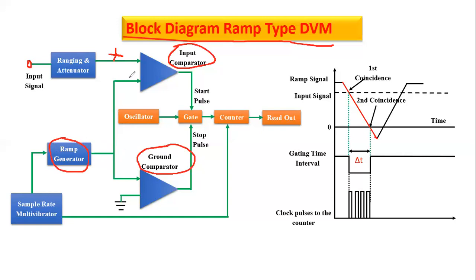The ramp generator value is fed to both the input comparator and the ground comparator. The ramp signal used here is the negative going ramp signal, because in this ramp type DVM working block diagram, we consider a negative going ramp. As time increases along the time axis, the signal value is reduced — it starts at a maximum and decreases until it reaches the time axis.